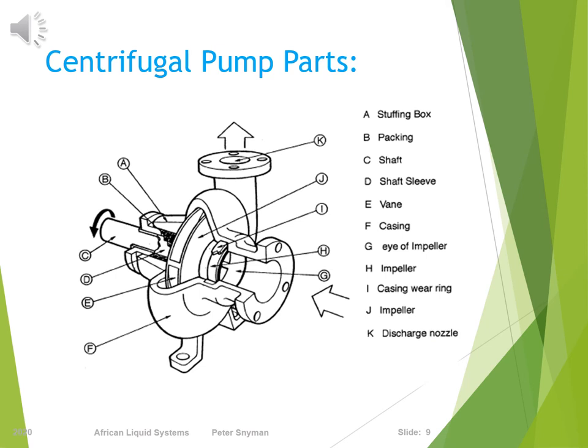Centrifugal pumps consist of many movable parts such as an impeller, bearings, shaft and seal. Other major parts are the seal chamber, bearing frame and volute casing.